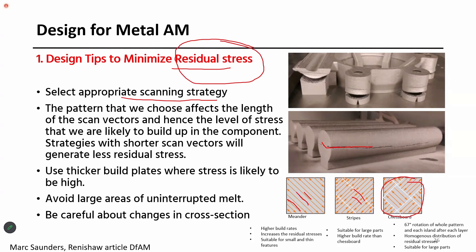Residual stresses ultimately lead to cracking in the 3D printed part. You can also use a thicker build plate to minimize residual stresses — it helps transfer heat from the 3D printed part to the build plate. You can also avoid large areas of uninterrupted melt pools. If you follow the same printing pattern, you will see a large melt pool, which may lead to more residual stresses.